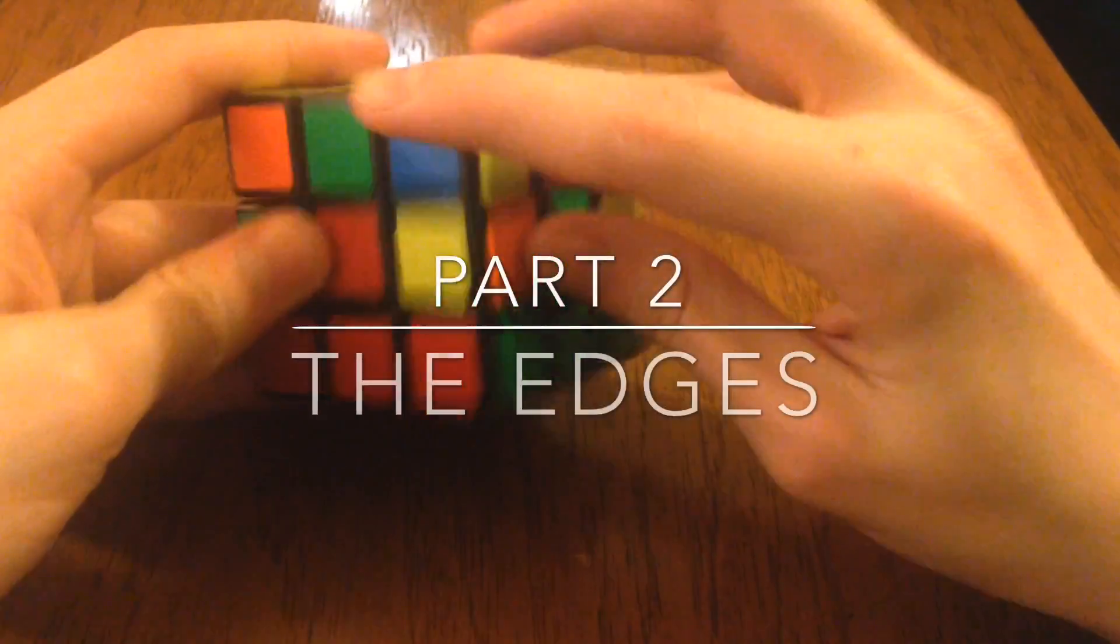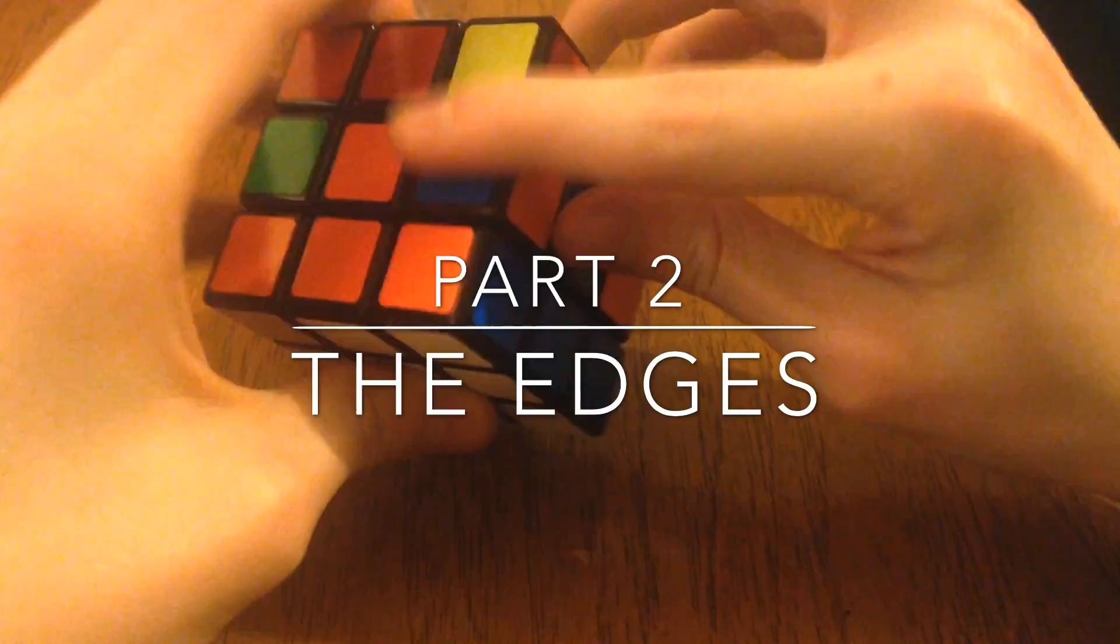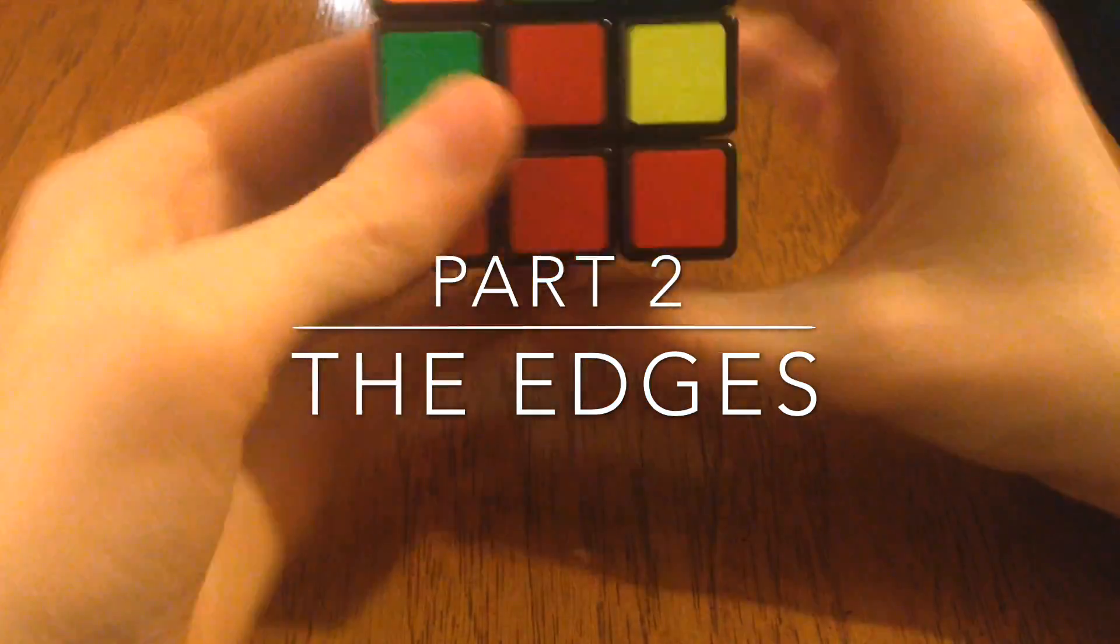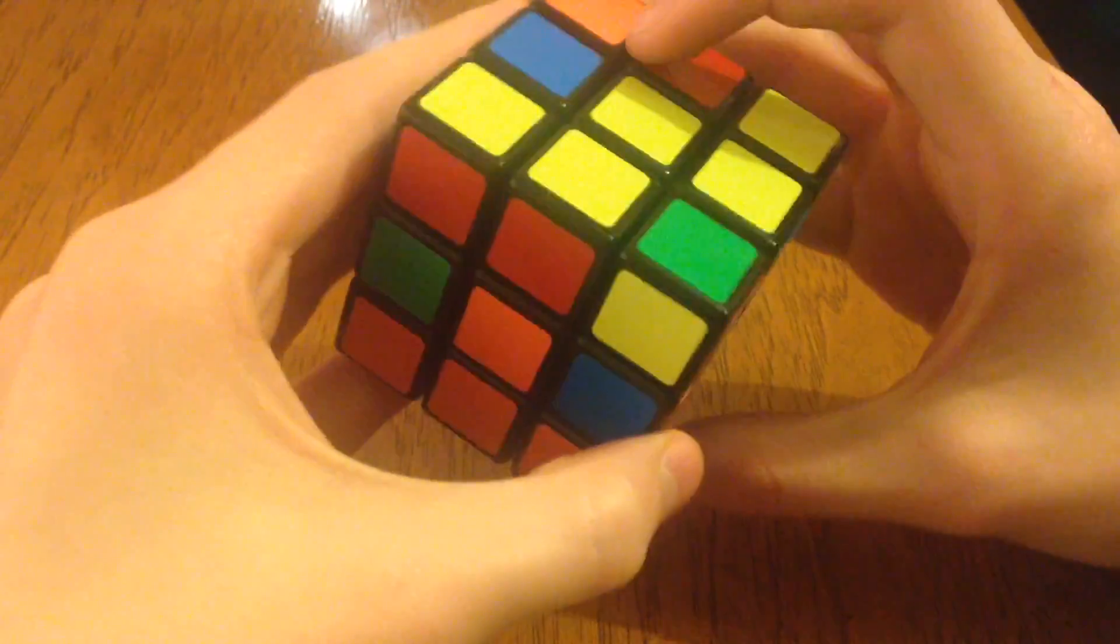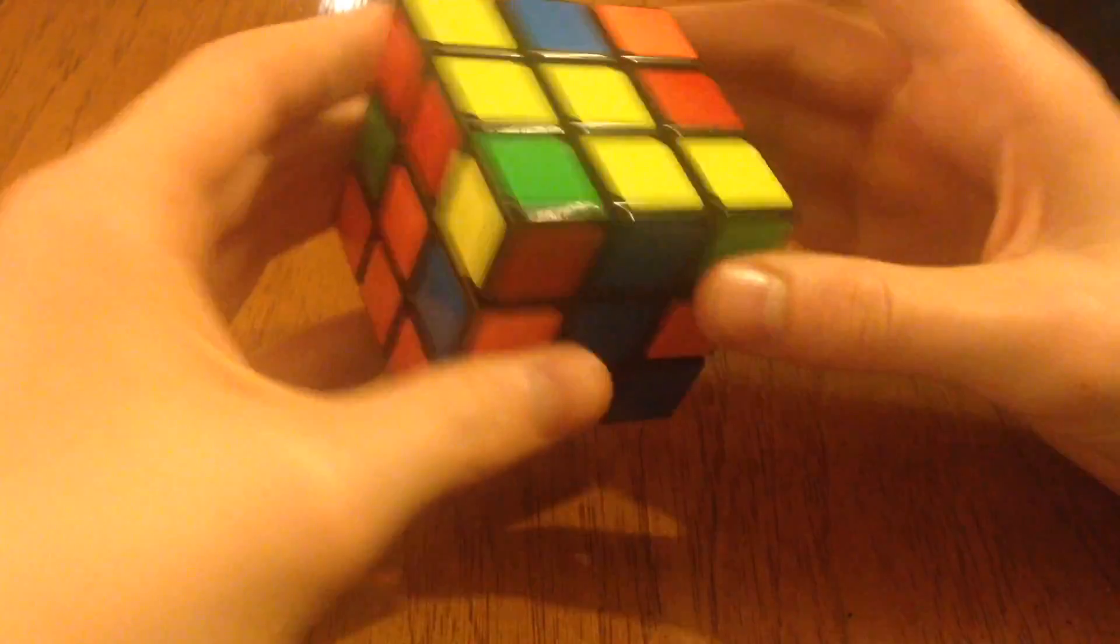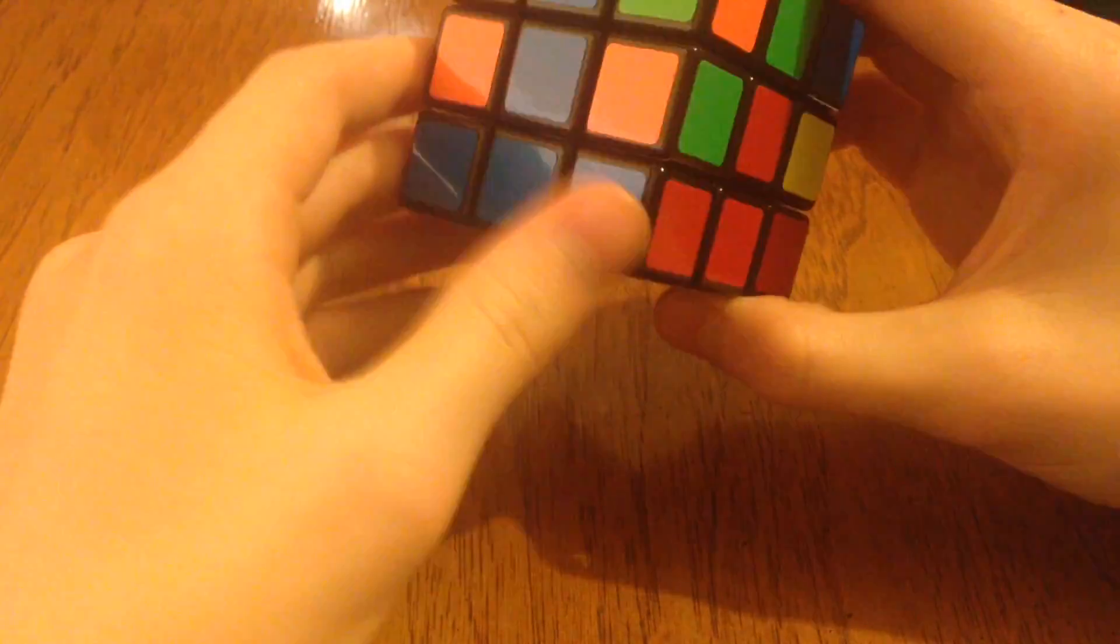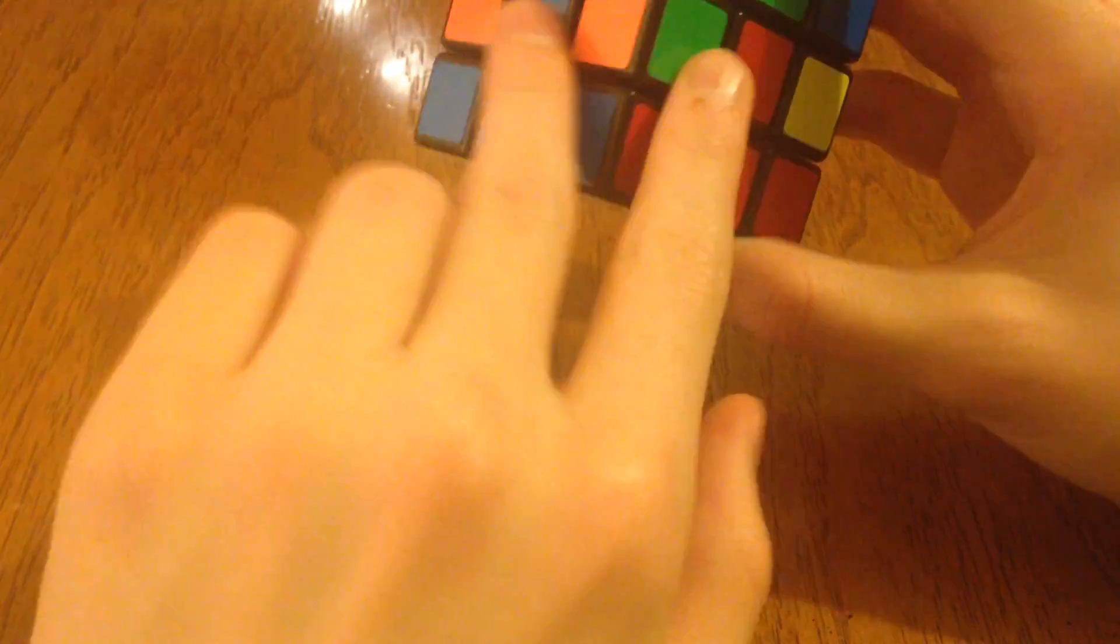Okay, so the next step is we're going to get these edge pieces, just like here. There's only four of them, but sometimes it can take more than four things, but that's all we're doing for this second step. So basically, each of these has two sides, and it's going to have the two colors.